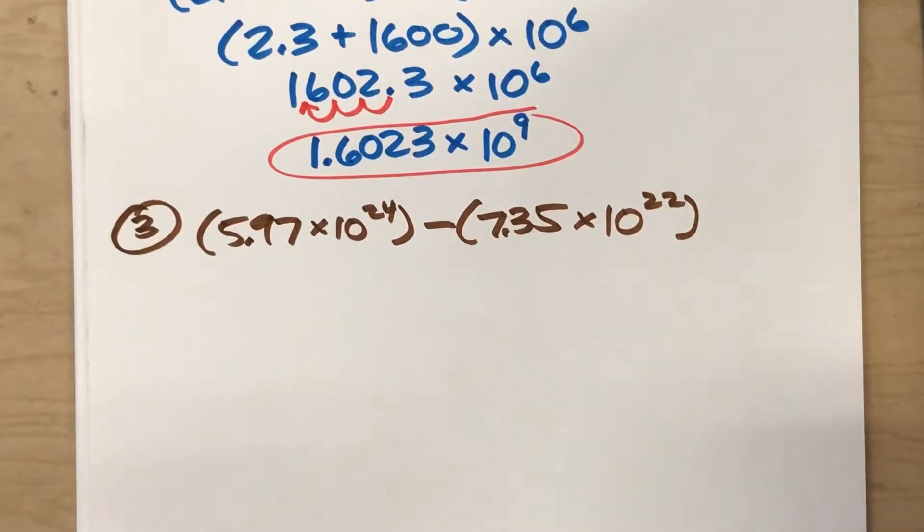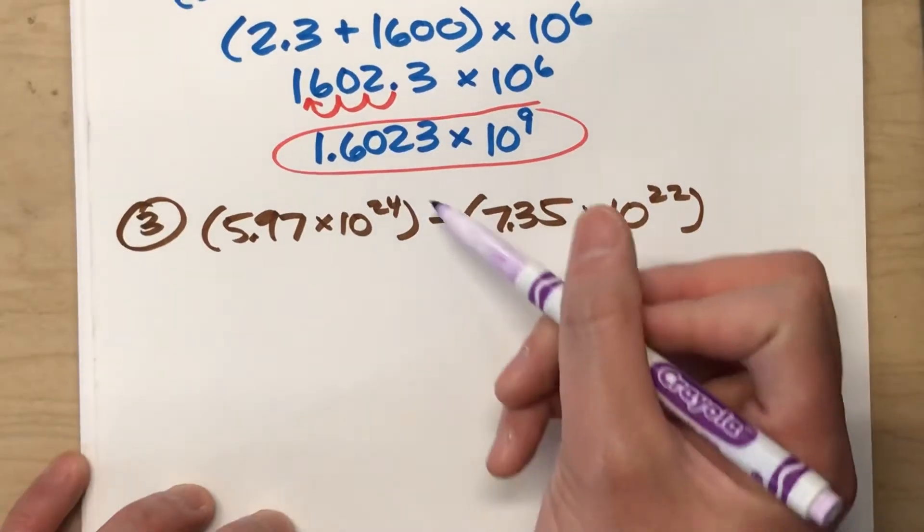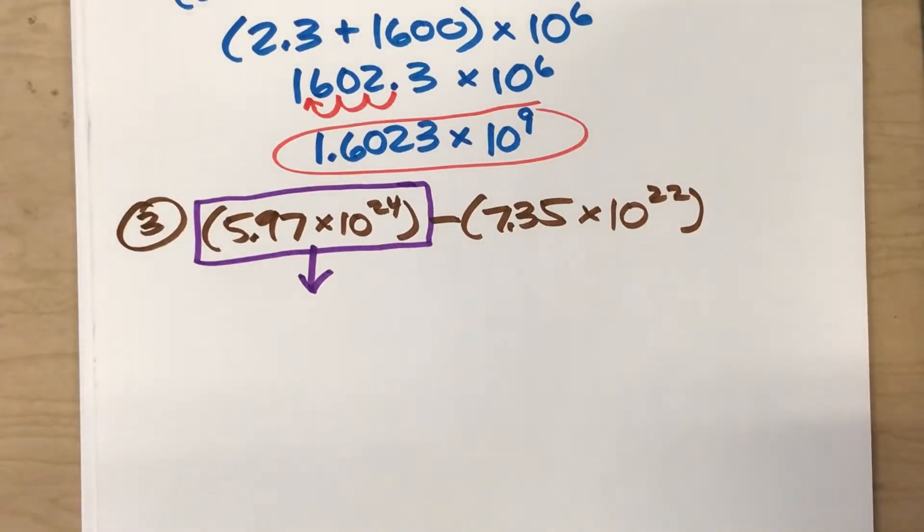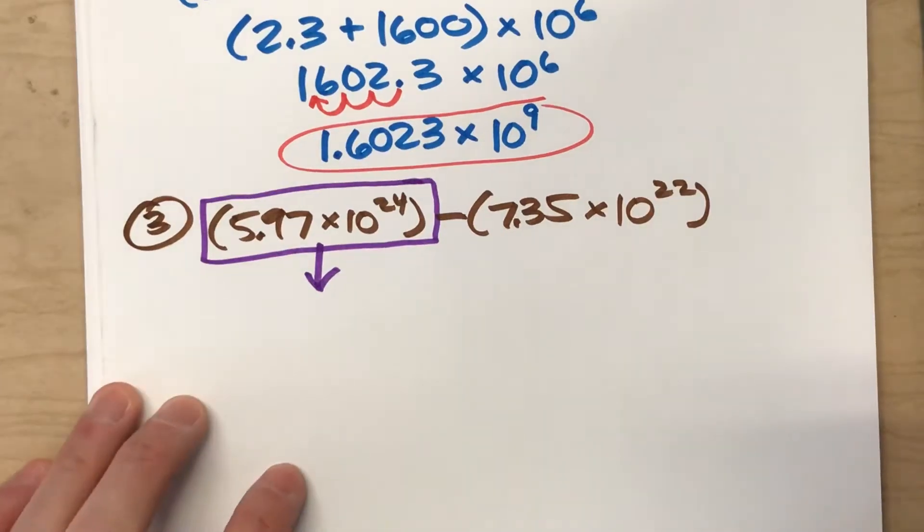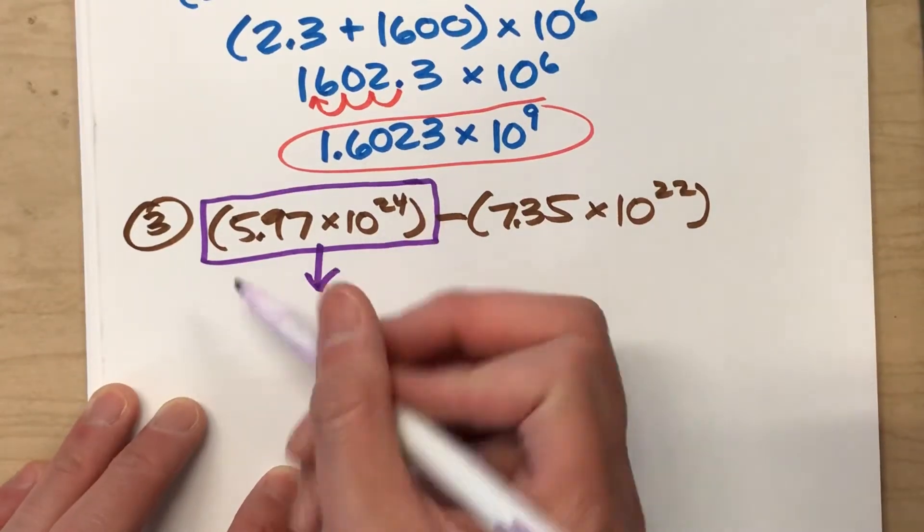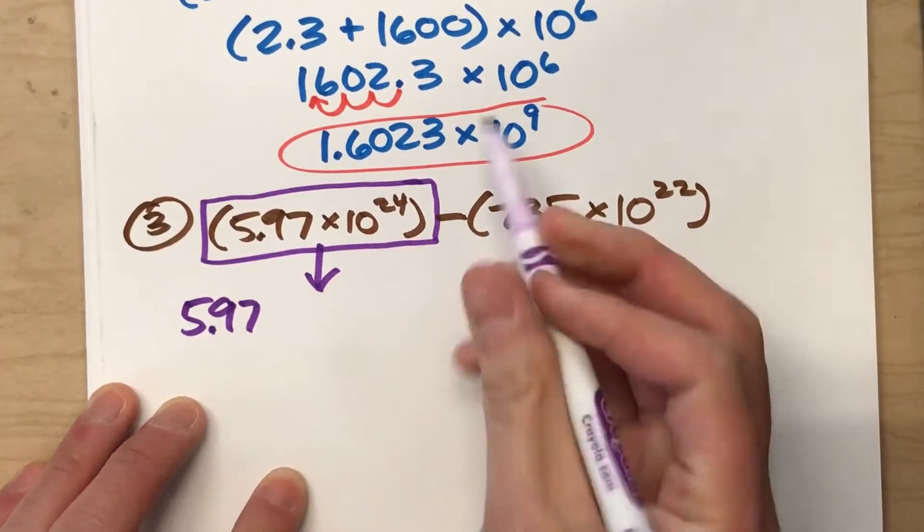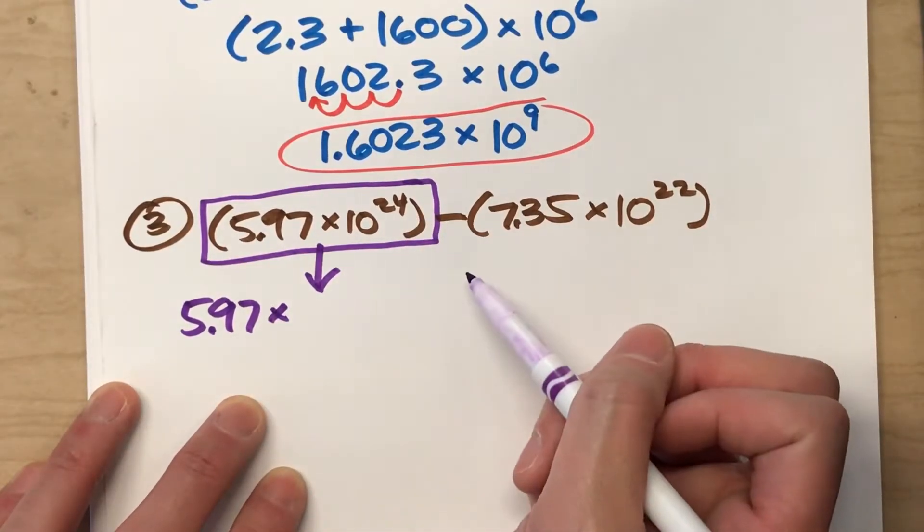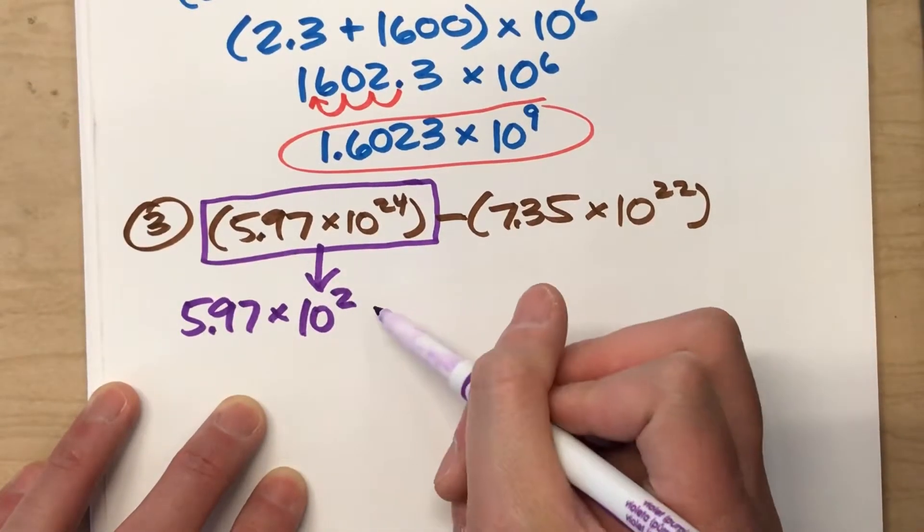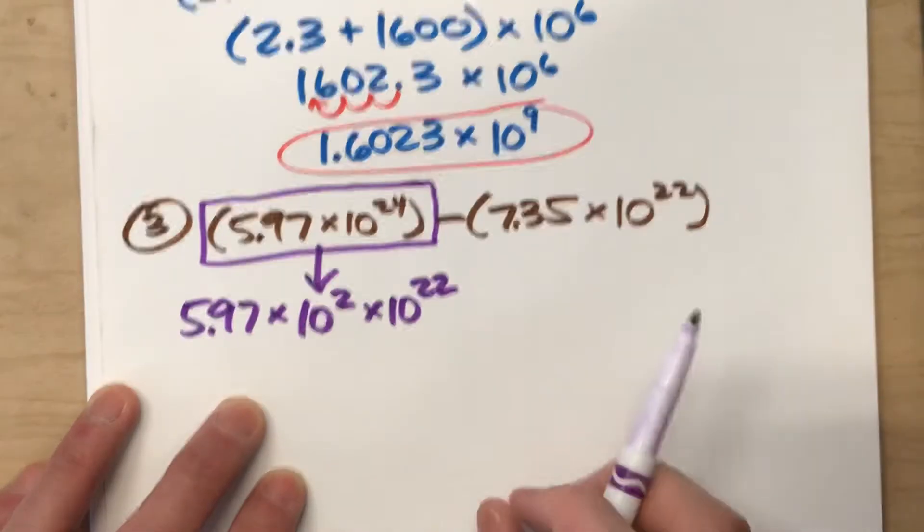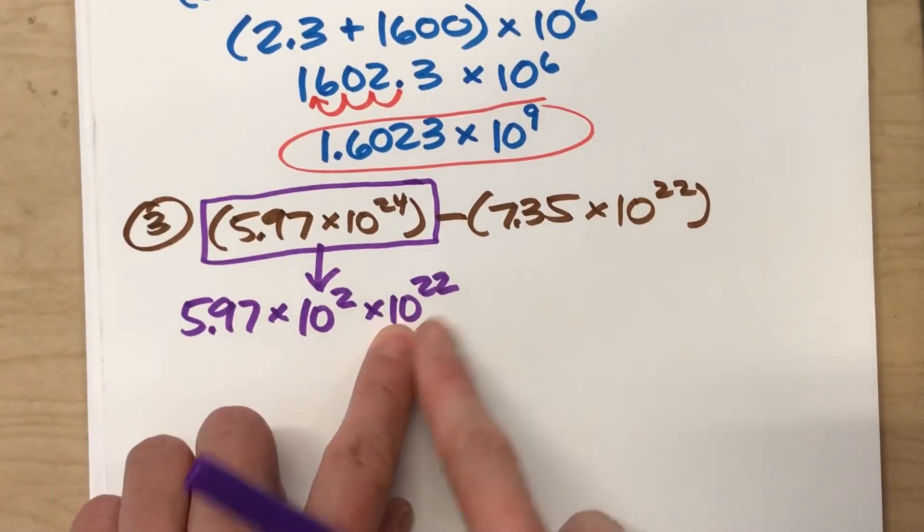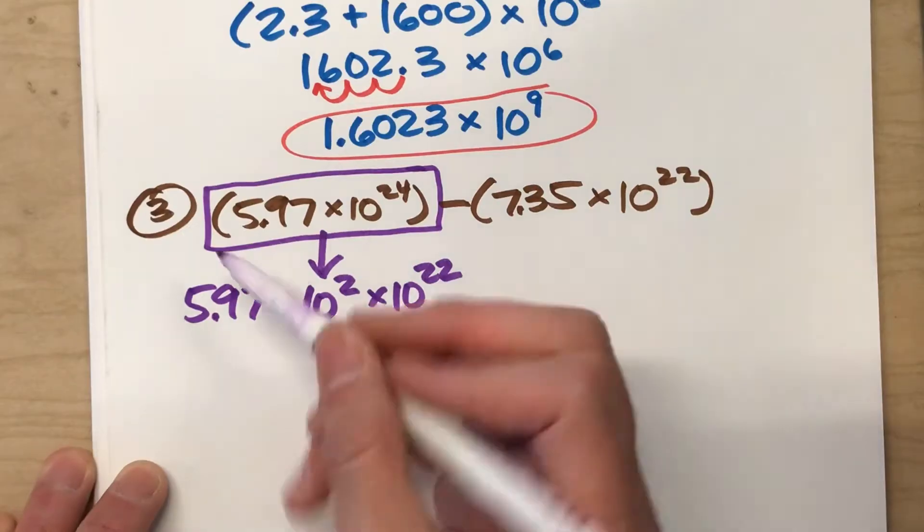So we need to change it so they are. And I always like to take the bigger power of 10 and change it. Although you could use the smaller one if you want to, I find that kids get a little confused by that one because we have to work with negative exponents. So I always like to use the bigger one. I need to make this into 10 to the 22nd power. So I'm going to keep the coefficient 5.97 and break up 10 to the 24th power. I need it to be 10 to the 22nd power. And I know 10 to the 2nd times 10 to the 22nd gets me 10 to the 24th, because 2 plus 22 equals 24. And that's the one I want, so they'll match up.